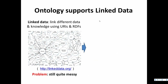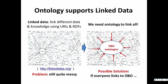Ontology also supports linked data, which links different datasets or knowledge using URIs or RDF. Looking at linked data today, when you have hundreds of linked data stores, each becomes its own silo. It's still quite messy, and the ontologies across linked data are not integrated. One solution is to map every linked database to the OBO Foundry ontologies, which can solve the problem of data integration.